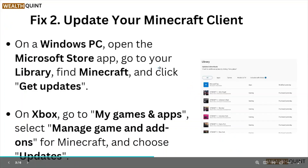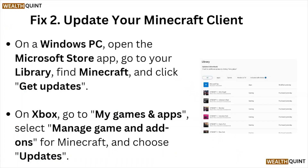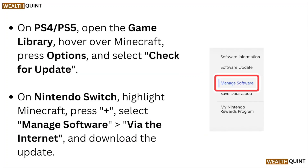On Xbox, go to the 'My Games' tab, select 'Manage Game and Add-ons' for Minecraft, and choose 'Updates'. On PlayStation 4 and 5, open the game library, hover over Minecraft, press Options, and select 'Check for Update'. On Nintendo Switch, highlight Minecraft, press Options, select 'Manage Software via the Internet', and download the update.